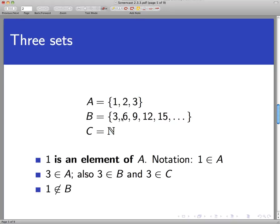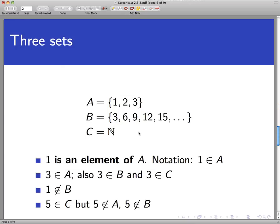1 is not an element of B. It's just not in there. It's like I went on a trip and forgot to pack my shoes. It would be here if it were anywhere and it isn't. So 1 is not an element of B. And 5, for example, is an element of C, the entire set of natural numbers. But 5 is not an element of B and it's certainly not an element of A.